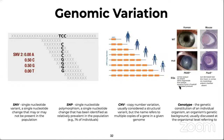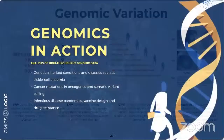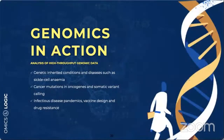There is a general query about projects — we will get to that at the end of the session. Let's move ahead and see how these variants and our understanding of them are used in real life to understand the impact of genomic data. Let's look at some genetically inherited conditions and diseases, such as cancer mutations in oncogenes and infectious diseases where drug resistance is involved.